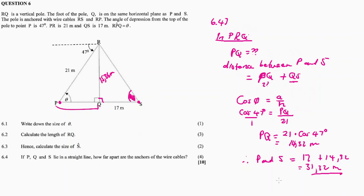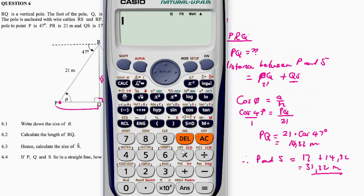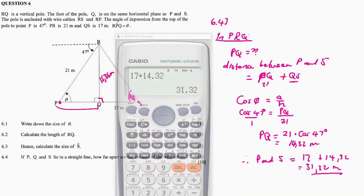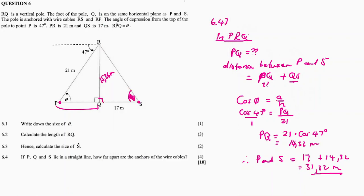17 plus 14.32 equals 31.32 meters. That is our final answer — the distance between the anchors of the wire cables. Thanks for tuning in and thanks for watching.